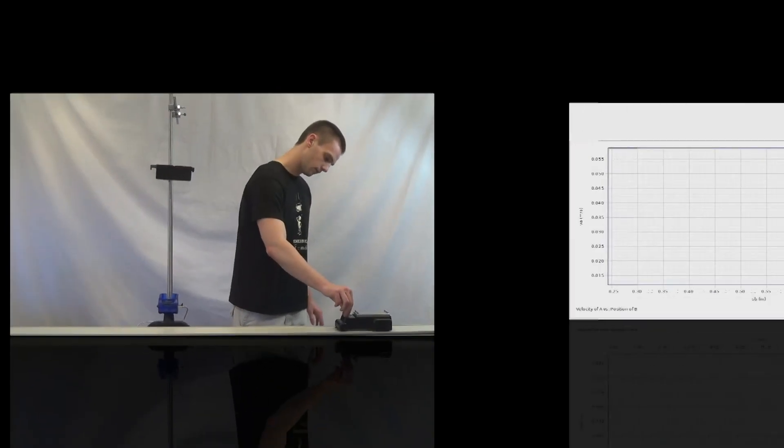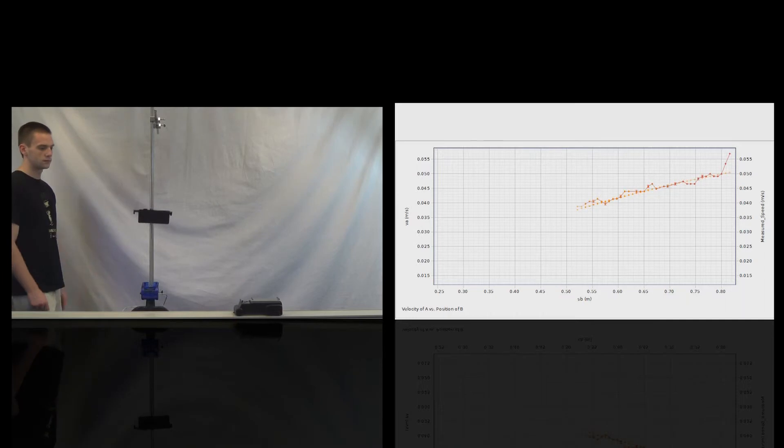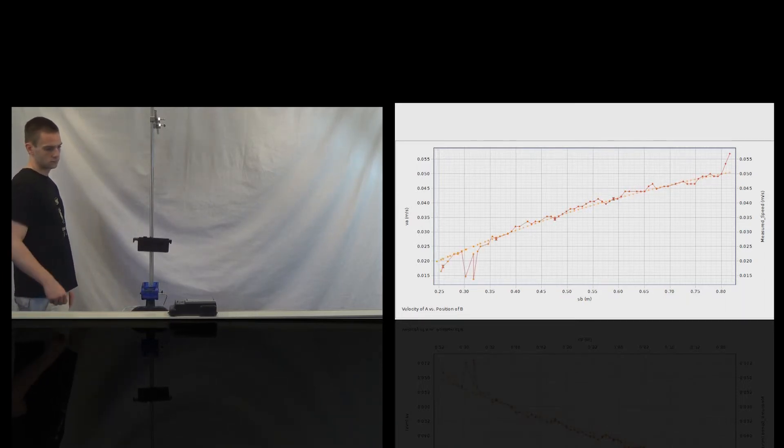The constant velocity cart will move to the left while we measure the position and velocity of the hanging block. We will then graph the velocity of the hanging block versus the position of B given by our length expression.